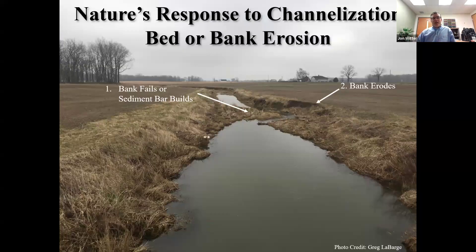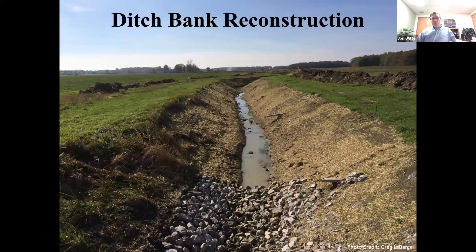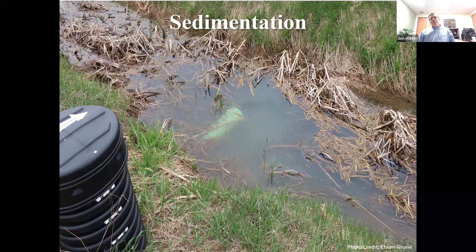Unfortunately, it doesn't always work well, and that's why we have ditch maintenance programs in higher-energy systems. One problem is bank failures — perhaps a bank fails, or a sediment bar develops, shifting flow against one bank and eroding it. Given that farmers like to farm in straight lines, that's a problem, and the typical remedy is bank reconstruction: lay the banks back, vegetate them, and restabilize the system. On the other end of the spectrum is sedimentation — low energy means not enough flow to transport supplied sediment, so it builds up, reducing capacity and causing more frequent field flooding.